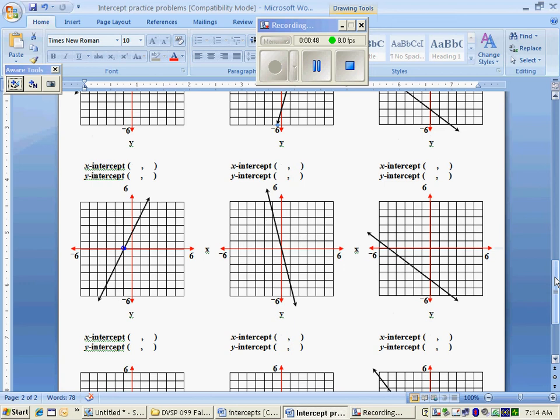Finding the intercepts first, the x-intercept is negative 1, 0. The y-intercept is 0, 2. There is only one intercept. They happen to be at the same point, 0, 0.